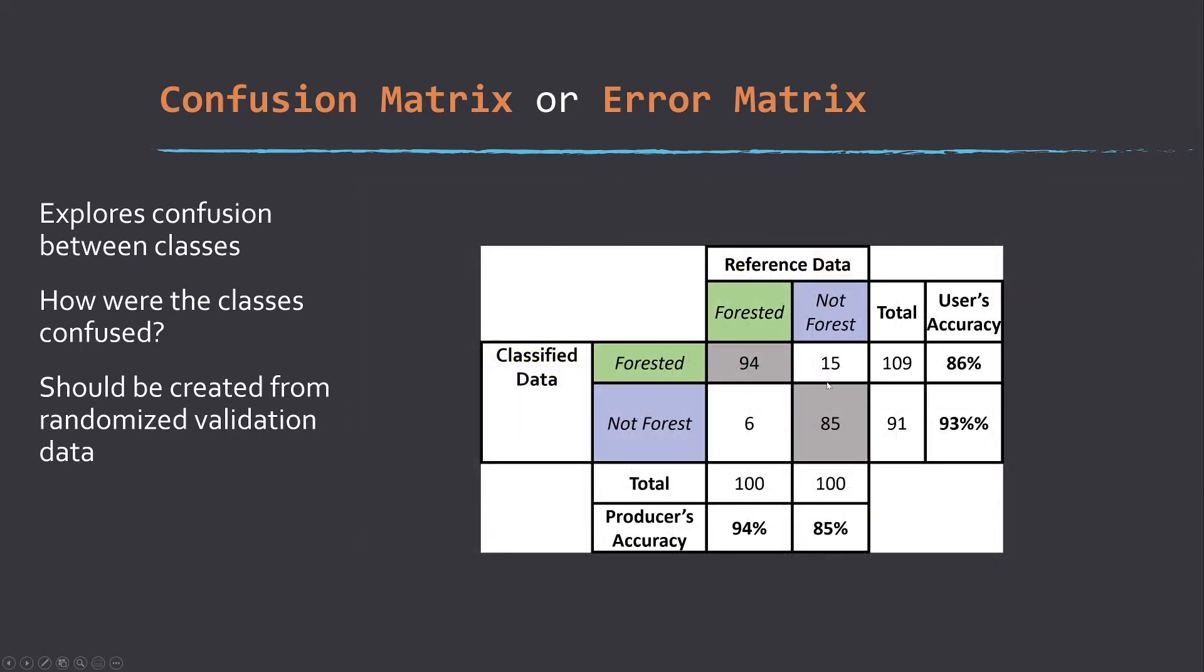Here's another error matrix. This is another example with only two classes. Here we're just simply differentiating forested and not forested. Our diagonal represents the correct classification, and the off-diagonal are the incorrect classification. In this example, we can see that a larger number of not forested samples were incorrectly classified as forest, as opposed to forested samples being incorrectly classified as not forest.